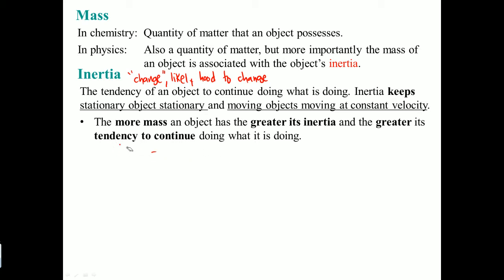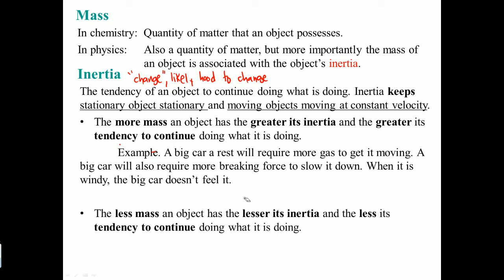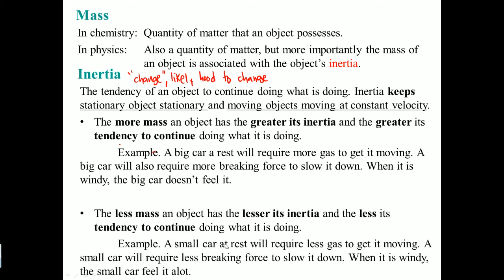But if an object has low mass, it has low inertia. Because it has low inertia, it is less likely to continue doing what it's doing. For example, a small car at rest will require less gas to move. And if it's moving, it will require less braking force to slow it down. When it is windy, the car will feel more of the wind because it is a smaller car — it has less inertia, so it's going to be affected by change more.